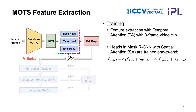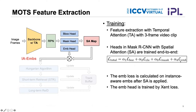We use temporal attention during the feature extraction stage with three-frame video clips. Based on the original Mask RCNN, we add an embedding head to extract tracking embedding features. During training, these three heads are jointly trained using a combined loss function considering bounding box loss, mask loss, and embedding loss. The embedding loss is calculated on the instance-aware embeddings after spatial attention is applied, trained using cross-entropy loss.